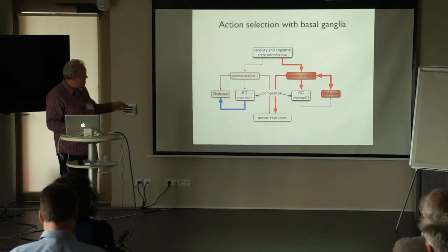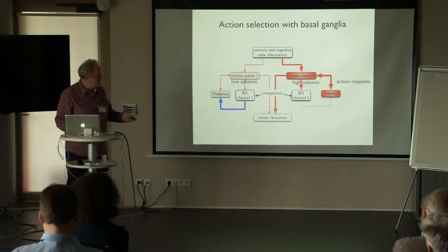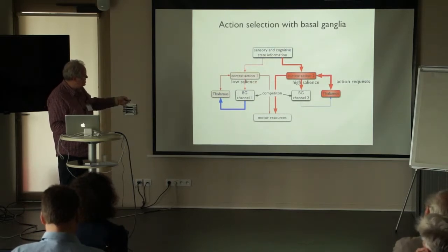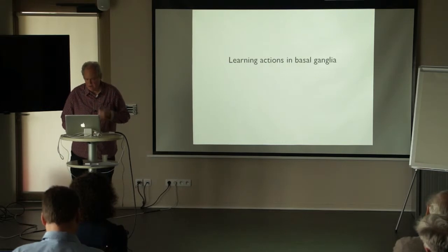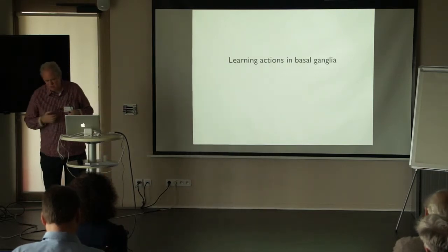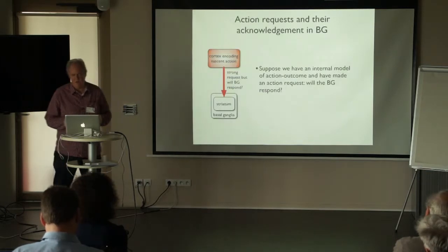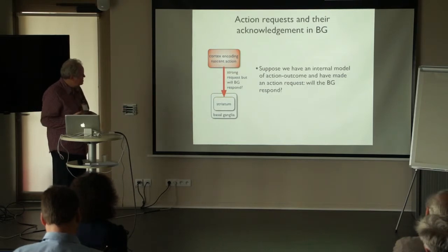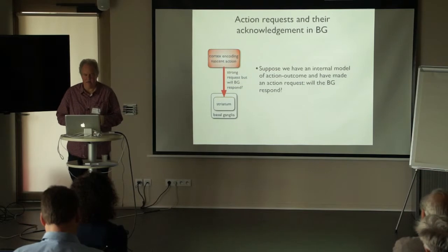These things are obviously anatomically co-localised but there is competition between them. The take-home message here is this notion of salience for action requests coming in from cortex to the relevant basal ganglia channels. That's how we might select actions which are already in existence and already encoded in basal ganglia. But what we want to do here is to try and understand how new actions are learnt in basal ganglia. The problem is this: we could have an encoding of some nascent action in cortex sending a strong request down to the basal ganglia — in particular the input nucleus, the striatum.